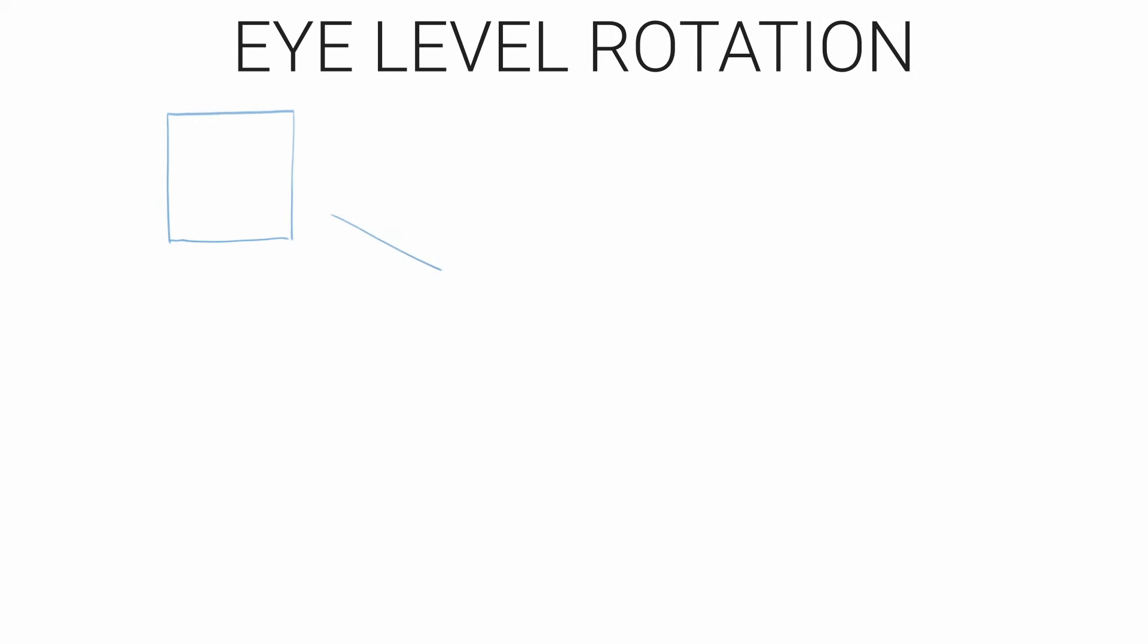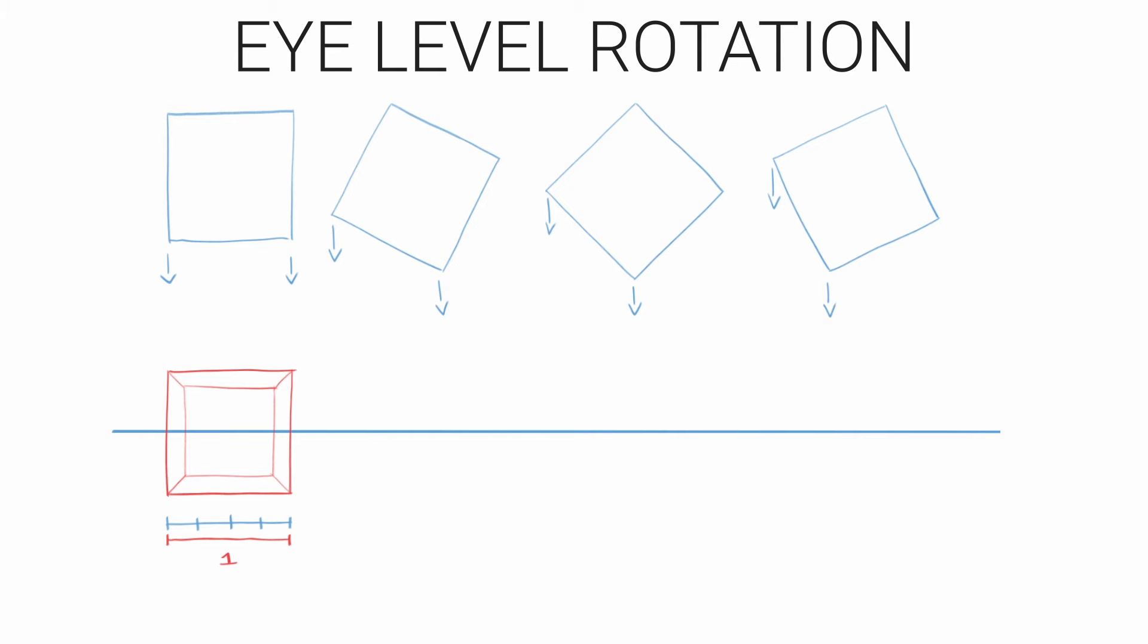Okay so first thing we're going to start off with is the simplest rotation in my opinion and that is the front view eye-level rotation. So I'm starting off here by drawing the top-down view and one thing we need to notice is how the box is coming closer to us as it's been rotated. What I'm doing now is dividing the box into quarters and I'll use these quarters to help me draw the boxes.